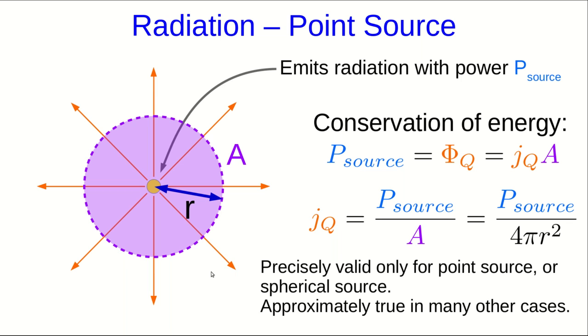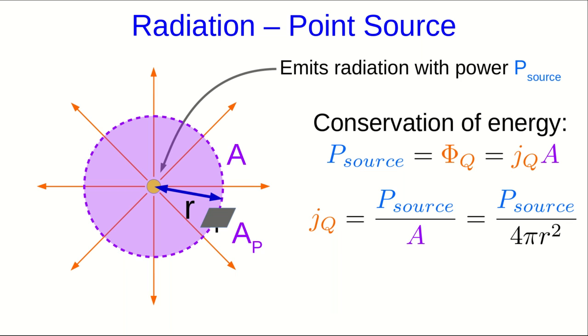This now allows us to find amounts of energy transferred from this source. Suppose this source was maybe the sun, and we think about a solar panel at a large distance r from it, and that solar panel has an area A_p. Then the power received by the solar panel would just be the flux density at its distance from the sun times the area of the panel.